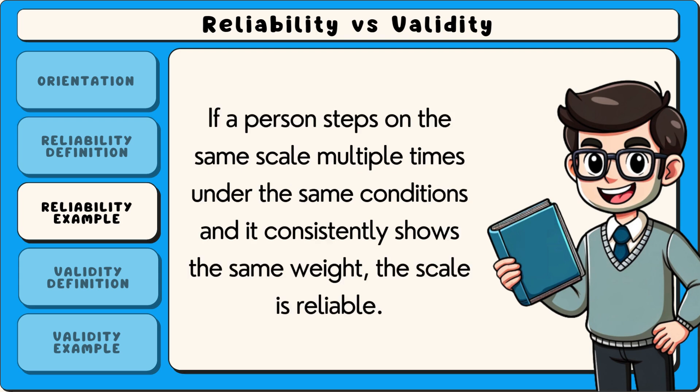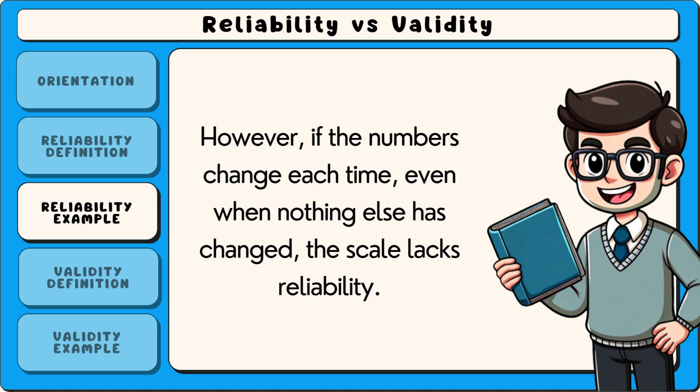An example of reliability can be found in weighing scales. If a person steps on the same scale multiple times under the same conditions and it consistently shows the same weight, the scale is reliable. However, if the numbers change each time, even when nothing else has changed, the scale lacks reliability.